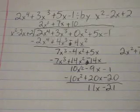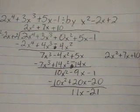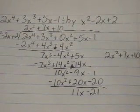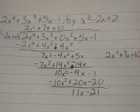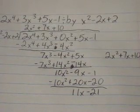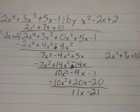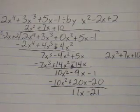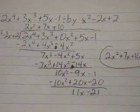And then you add your remainder over your divisor, which is 11x minus 21 over x squared minus 2x plus 2. And that is your final answer.